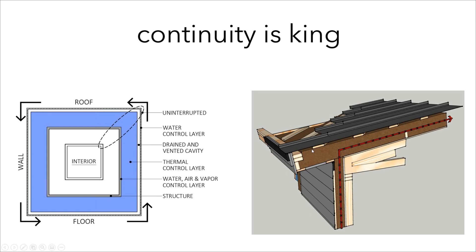We'll show another project later where we didn't have any overhangs. It just became this principle here — continuity, form followed function. The function is keeping the insulation continuous, and then the form of the building was informed by this function.